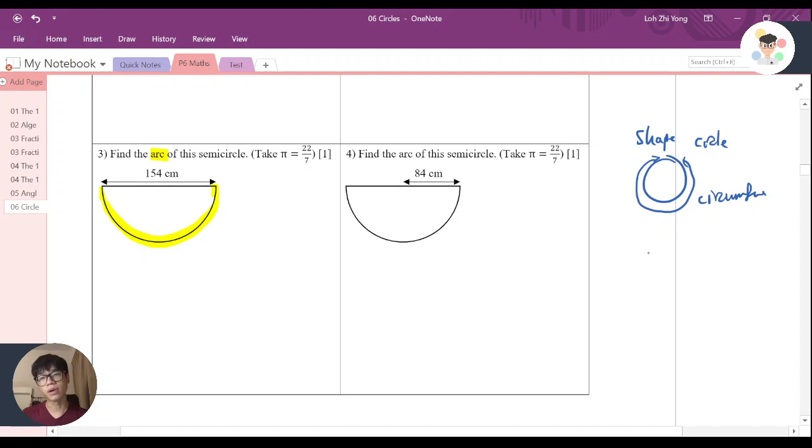But if I'm looking at only a part of this line, for example, this is a shape called semi-circle. And this is a part of the circumference. That's why we call it arc. And now I'm looking for this arc.